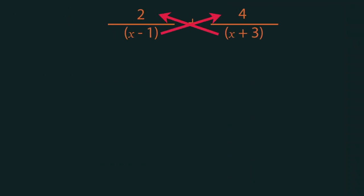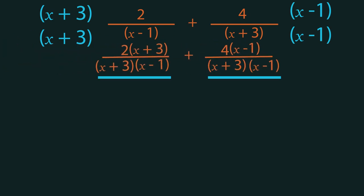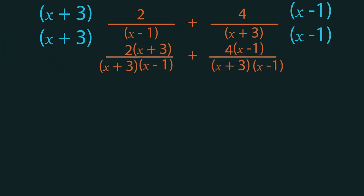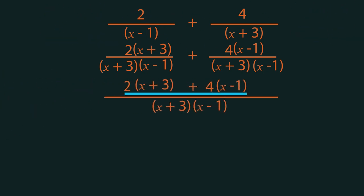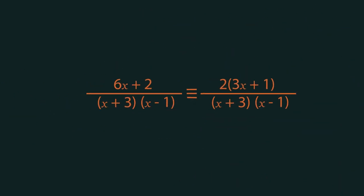Cross multiply so that both fractions have the same denominator. We multiply this one by (x + 3) and we multiply this one by (x − 1). As they have the same denominator we can now add them together. Expand the brackets in the numerator and simplify fully. This is the correct fully simplified answer, or you could also write it like this — either one.